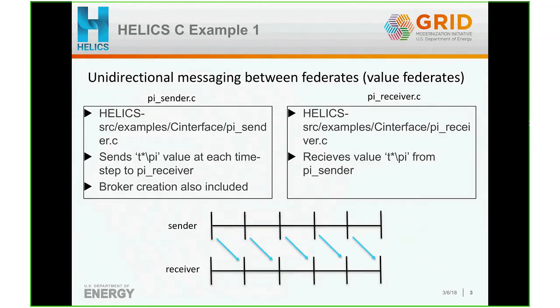I'm going to be talking about three examples. The first C example is a very basic example showing unidirectional messaging between two federates. In this example, both federates are value federates. It has two federates: the first federate called pi_sender is in the file pi_sender.c, and the second federate is pi_receiver, which is in the file pi_receiver.c.